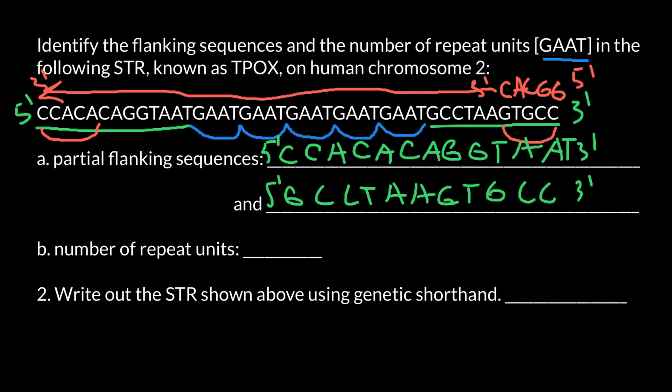Part B: number of repeat units. The number of repeat units is 1, 2, 3, 4, and 5. We put the 5' end here and write out the STR shown above using genetic shorthand. Our core sequence is GAAT and the number of repeats is 5, so we put 5 here. This is the shorthand way to write this sequence.